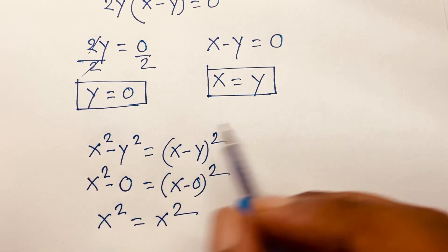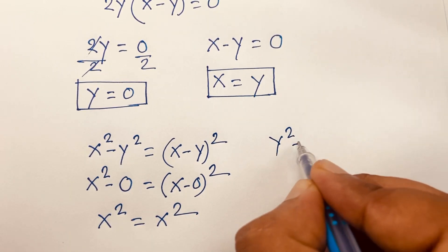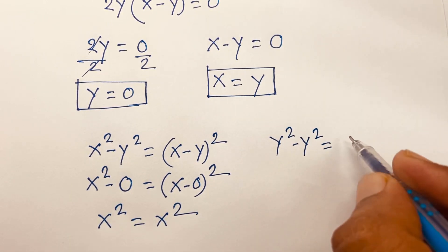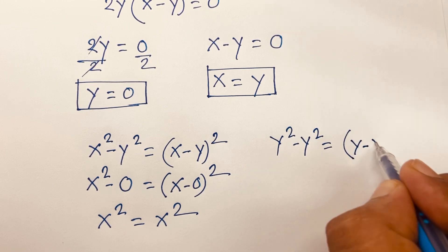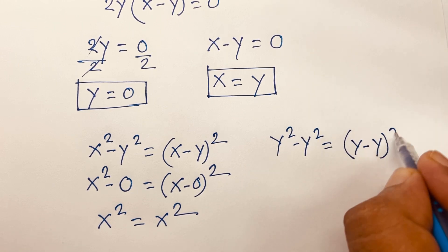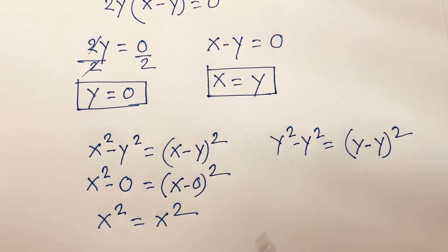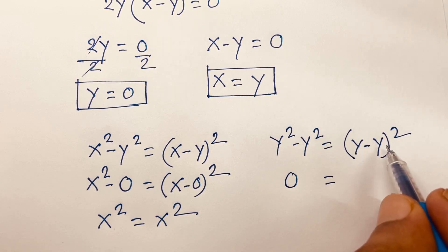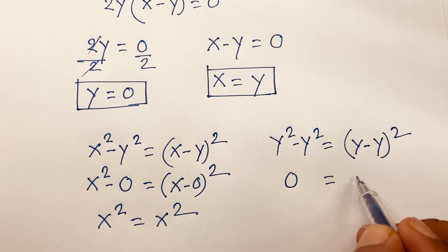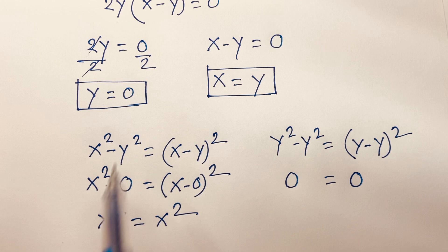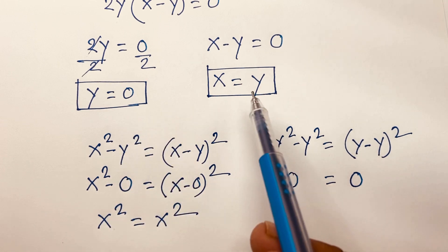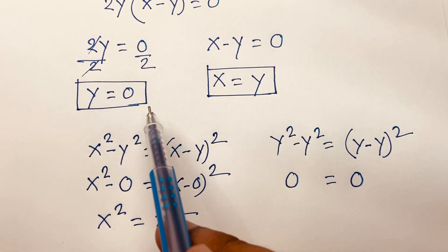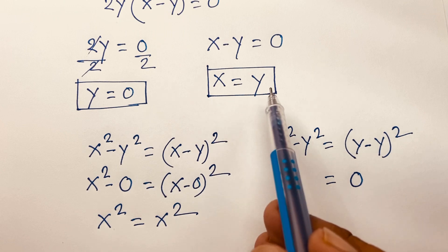For the second case, x equals y: substituting gives y squared minus y squared equals (y minus y) whole squared, which simplifies to 0 equals 0. This is also true. So our final answers are y equals 0, or x equals y.